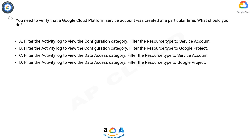Option B: Filter the activity log to view the configuration category. Filter the resource type to Google Project.